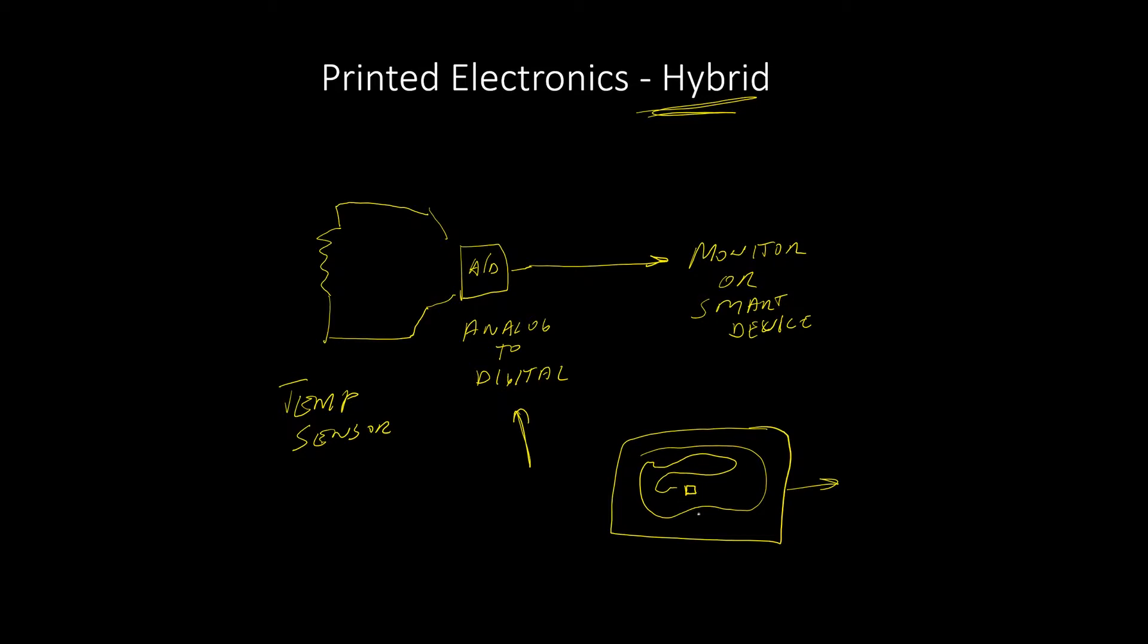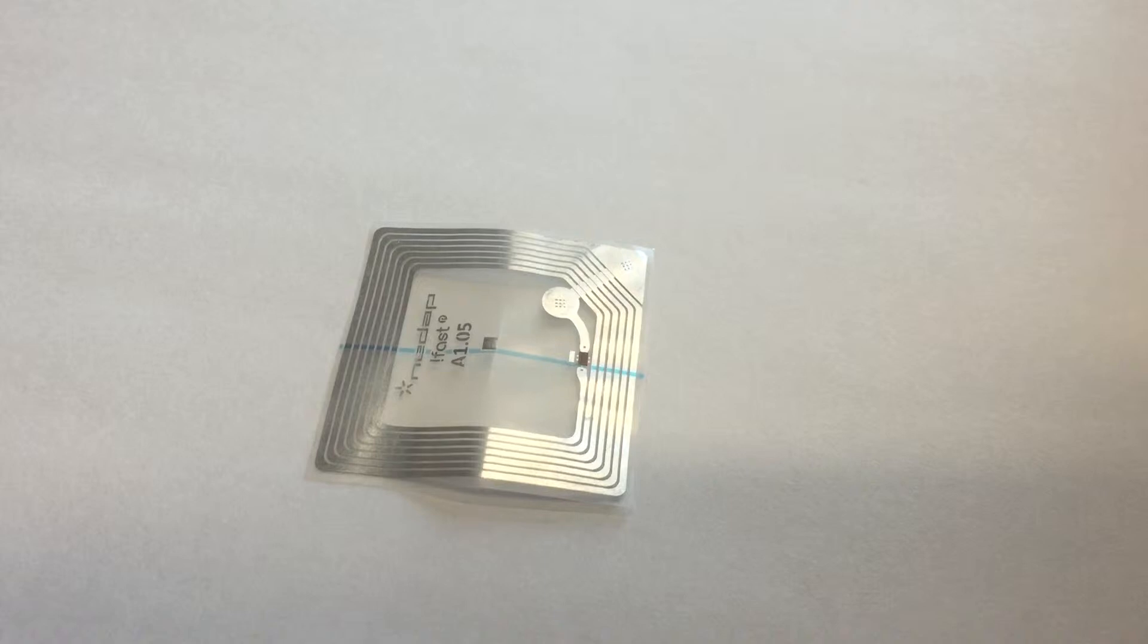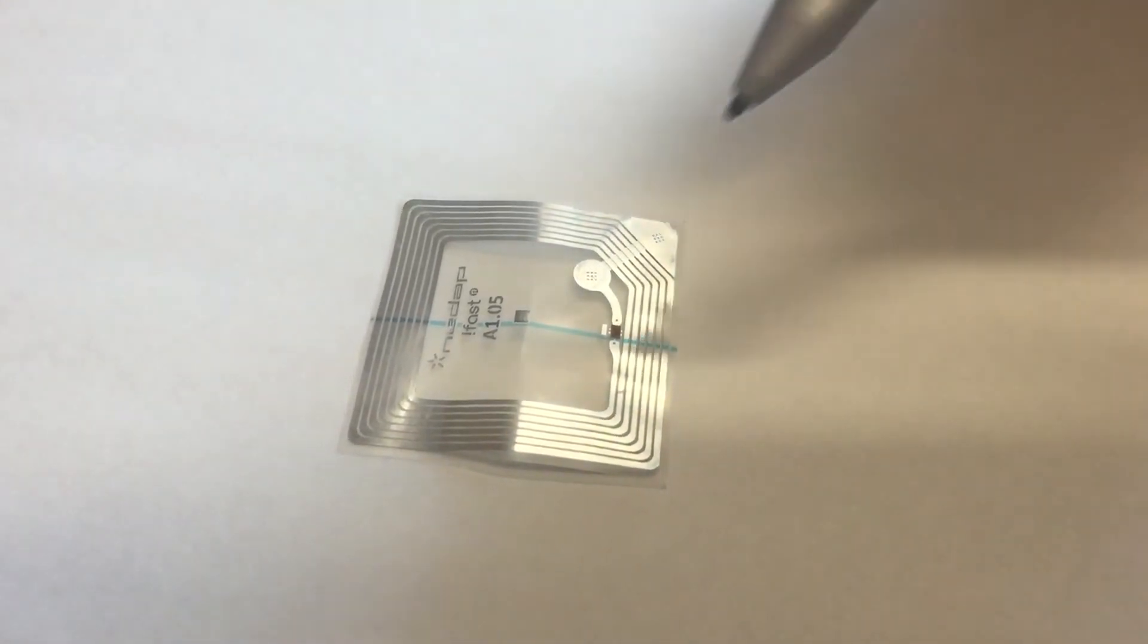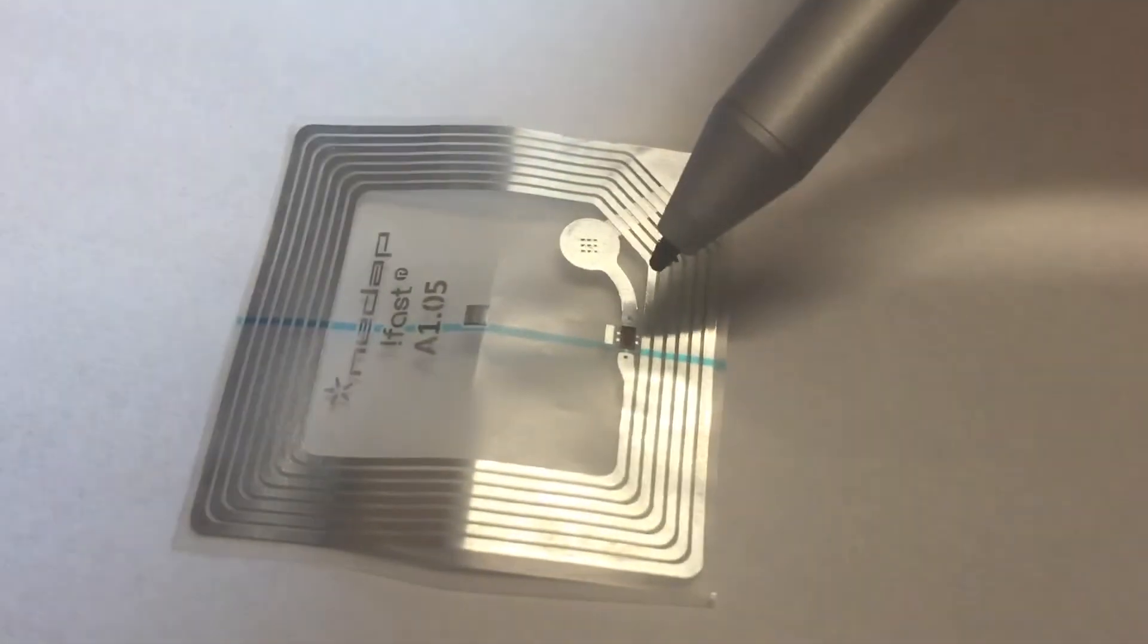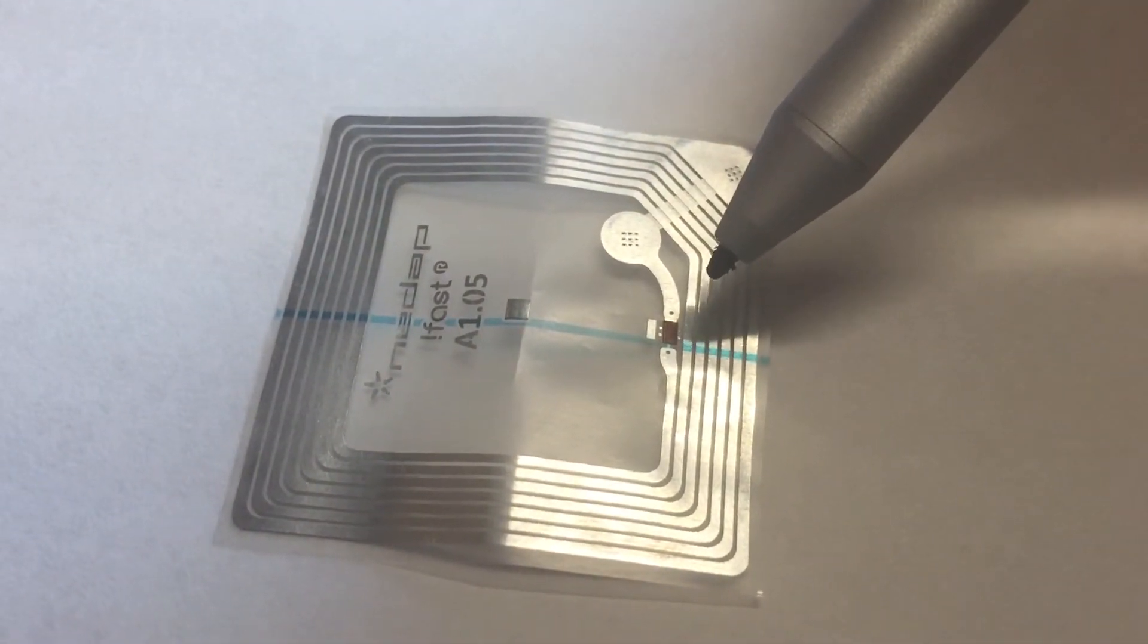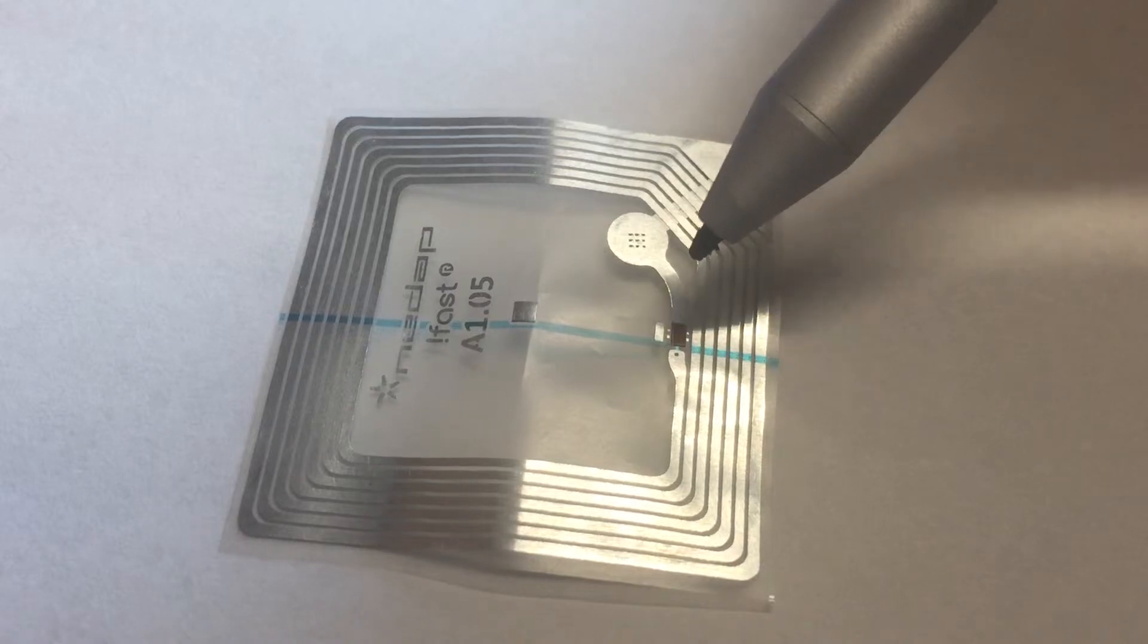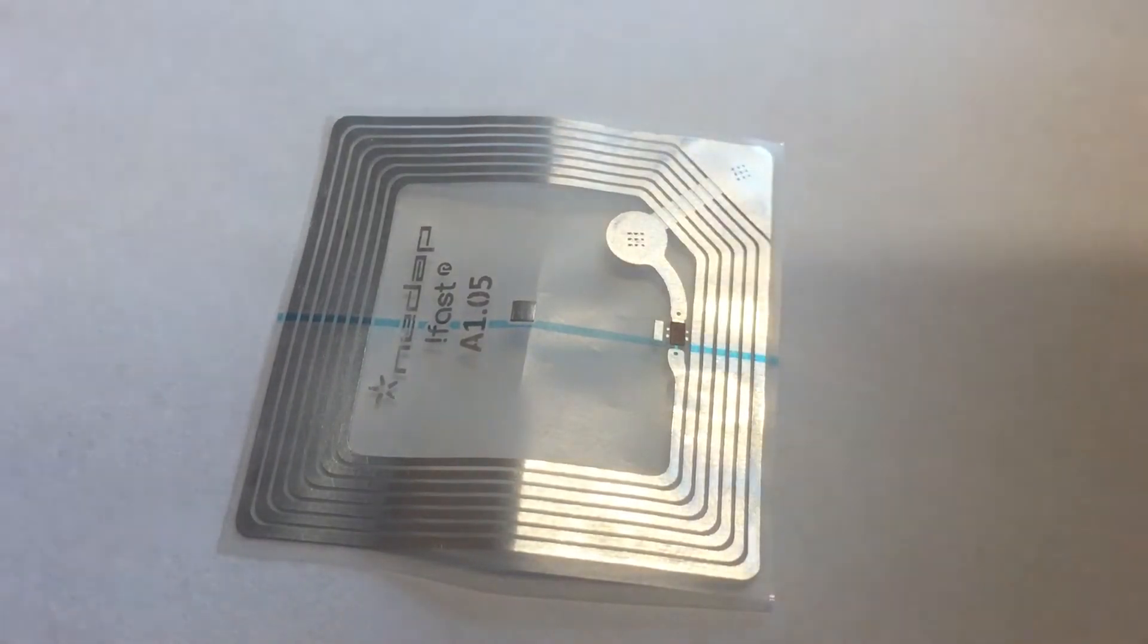So you can do small processing here like a simple A to D conversion or maybe a little bit of memory or something like that. So if you look at this particular small circuit that we have right here, the circuit itself was printed. You can see all the lines around the edges of there.